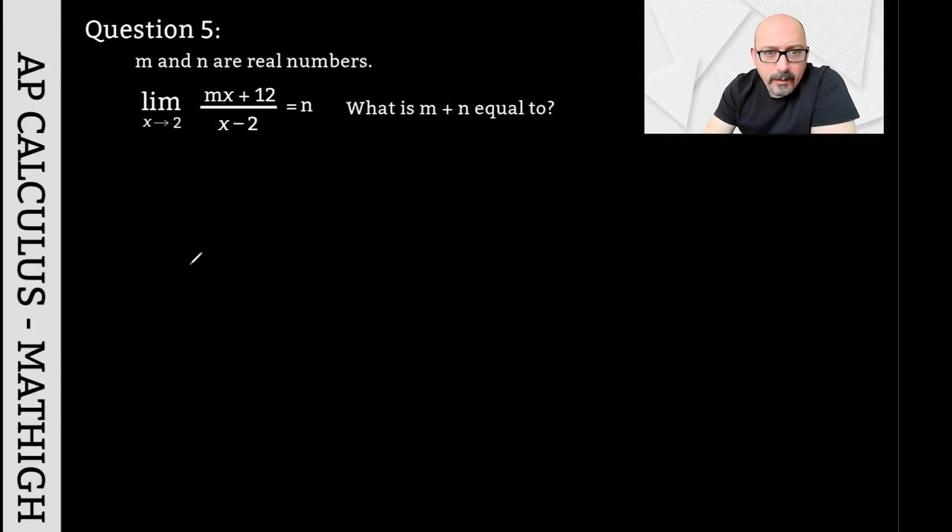The fifth question is: for real numbers m and n, as x approaches 2, the limit of (mx+12) divided by (x-2) is equal to n. It was asked what the sum of m and n is equal to. Now, if you substitute 2 for x here, we get (2m+12) divided by 0 equals n. But the division of something by 0 cannot be a real number. Here, you need to understand this idea: when taking the limit, we encountered 0 divided by 0, because the denominator is 0. That means the numerator will also be 0. From here, uncertainty resolved, the answer is the number n.